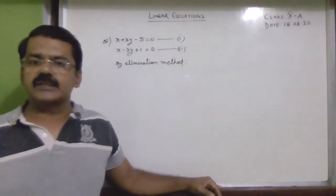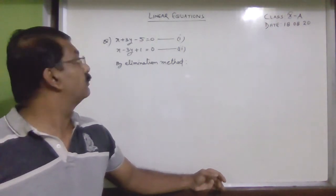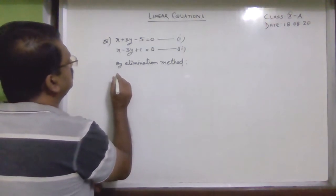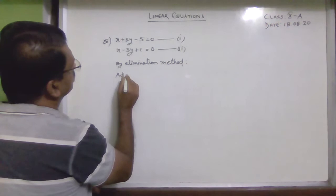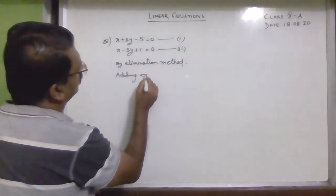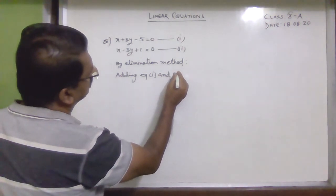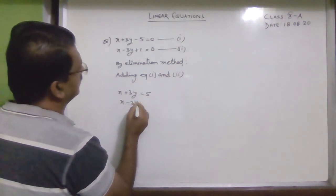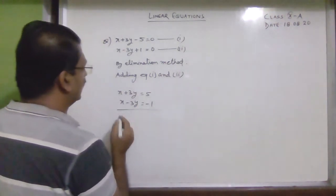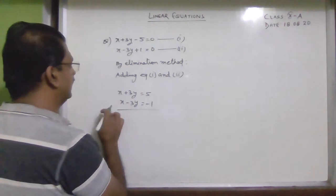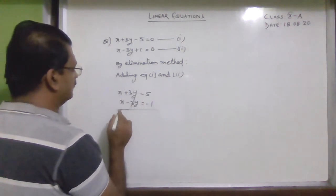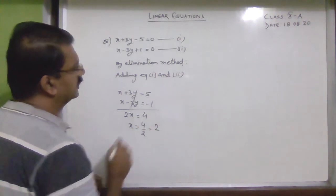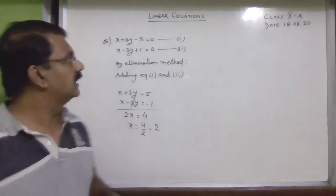In both equations, the coefficients of y are the same in magnitude but have opposite signs. So if you simply add equation 1 and equation 2, the terms containing y will cancel. Adding: x + 3y − 5 + x − 3y + 1 = 0, which gives 2x = 4, so x = 2.